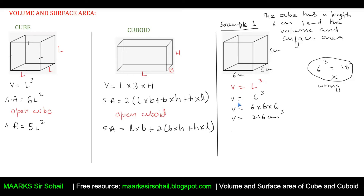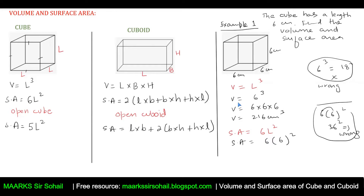To find the surface area, the formula is 6l². Surface area = 6 × 6² = 6 × 36 = 216 cm². A common mistake: students compute 6 × 6 = 36 and then square it — that gives the wrong answer. Always open the brackets first, apply BODMAS: evaluate 6² first, then multiply by 6.